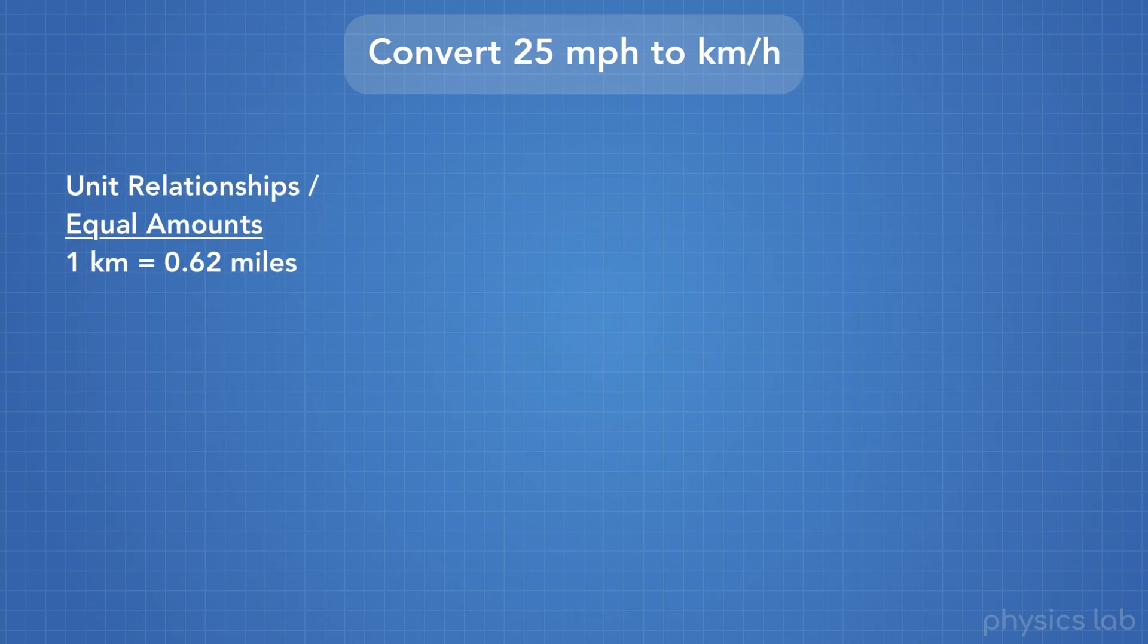Let's try one more example. Let's convert 25 miles per hour to kilometers per hour. First, we need to know the relationships between the units that we're dealing with. And in this case, we're given that one kilometer equals 0.62 miles.